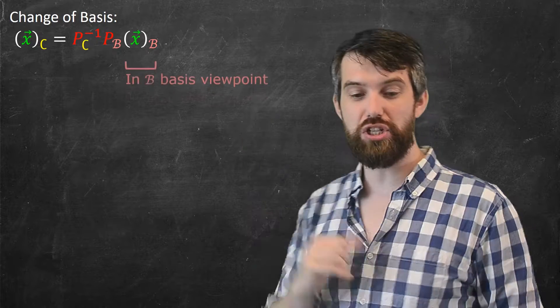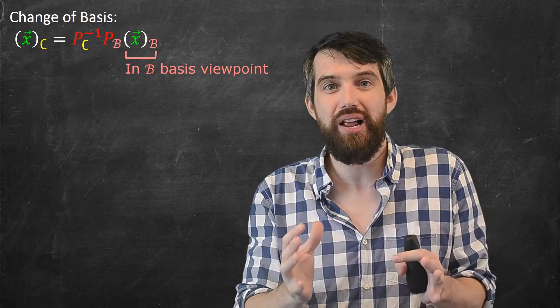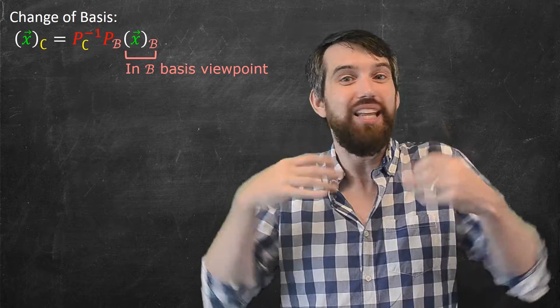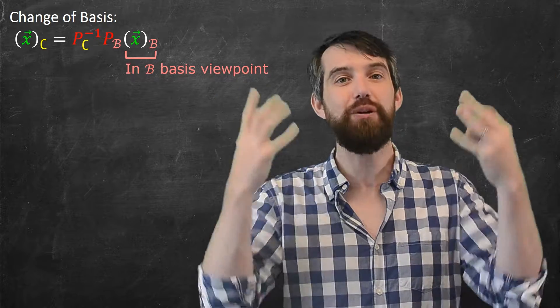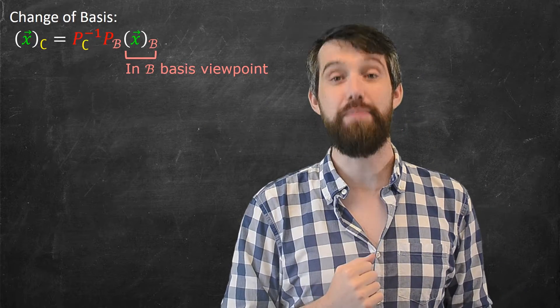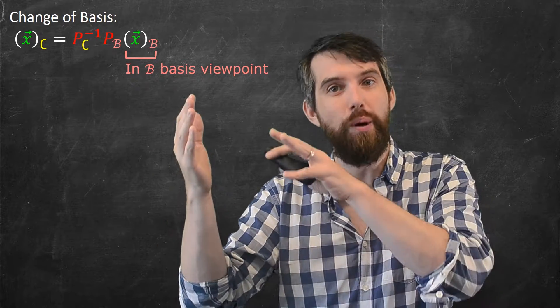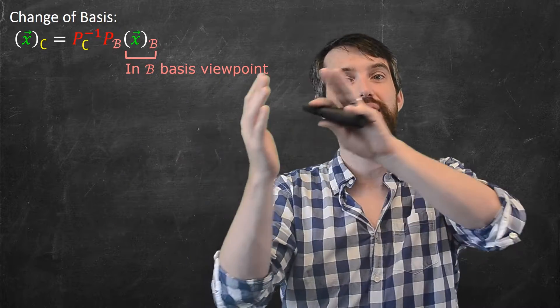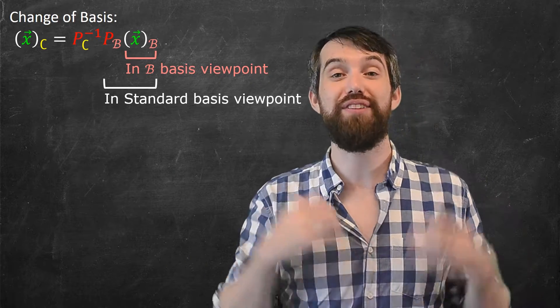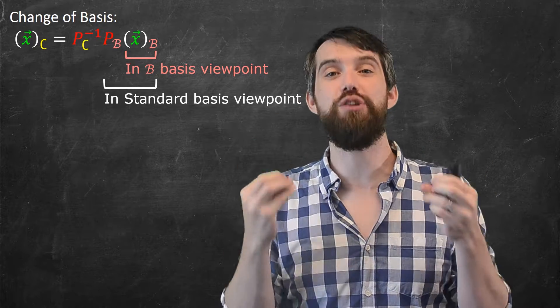The sort of most outside level is just looking at the xb itself. That is the vector x written in the b basis, and so it's living in b basis world. It's from the perspective of the b basis. Then I multiply by the pb, and what the pb did, its function was to transform from the b basis into the standard basis. So sort of the next level, I'm going to have everything thought of from the standard basis perspective.